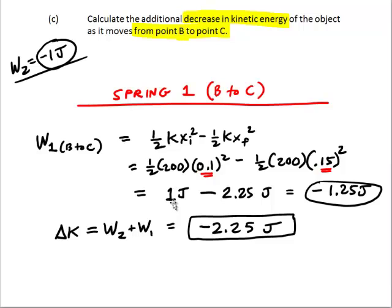This ends up being 1 joule minus 2.25 joules, which is negative 1.25 joules. So that is from the spring 1.